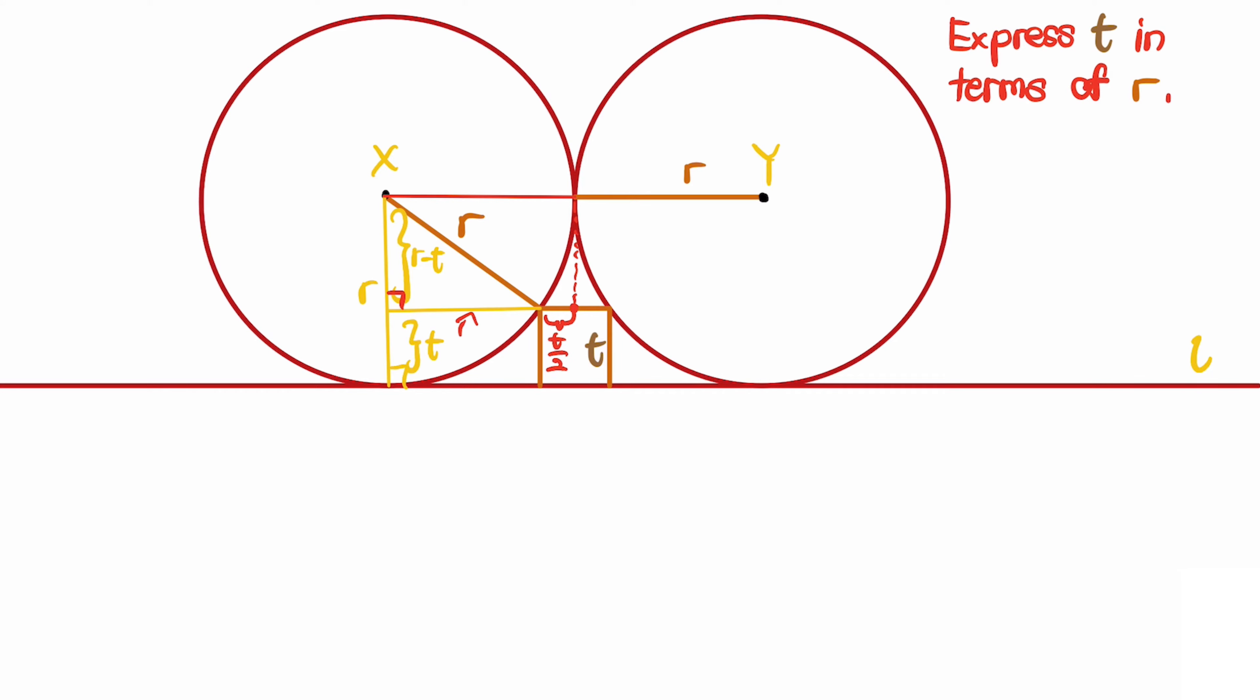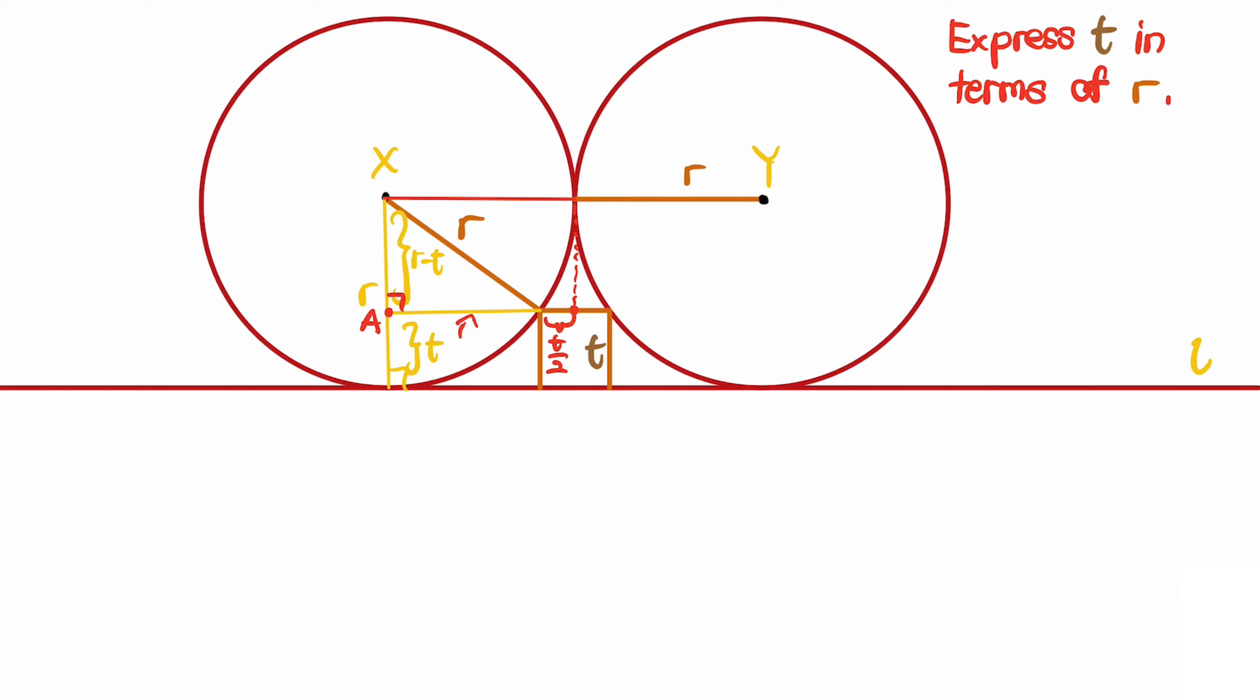Let me name this point as A, this point as B, and this point as C. You can see that the line AB has length (r - t)/2.